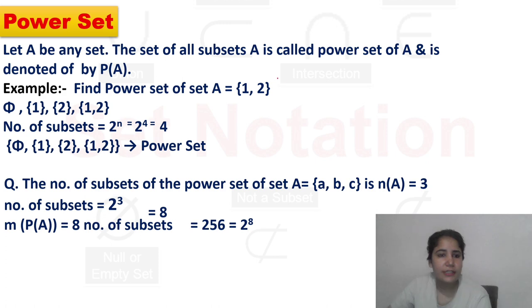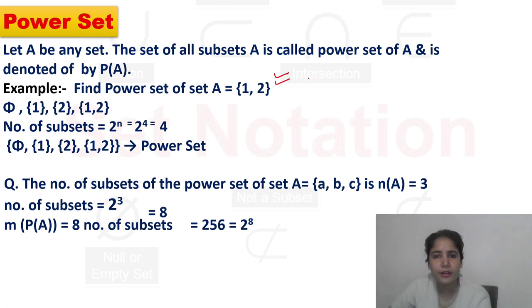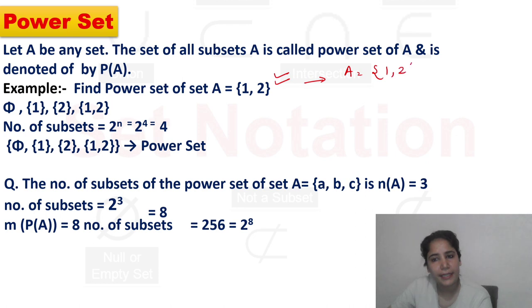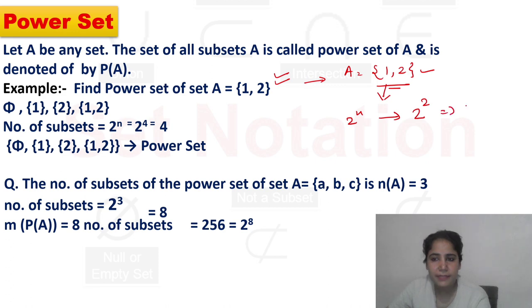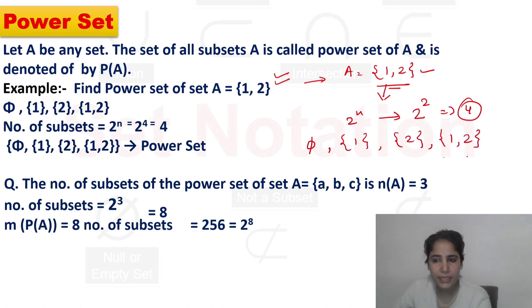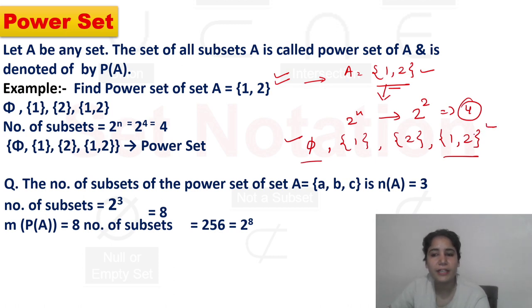आज power set में आपको यह देखने को मिलेगा कि कितने elements आपको मिलते हैं। We have already taken the same example in the last lecture. जैसे कि अगर मैंने set A लिया जिसमें 1 and 2 हैं — 2 elements हैं — with the formula we get 4 subsets. वो 4 subsets होंगे: null set, {1}, {2}, and {1,2}. हर एक subset form करने से पहले एक null set और एक real set तो आप बना सकते हो।